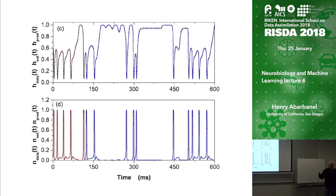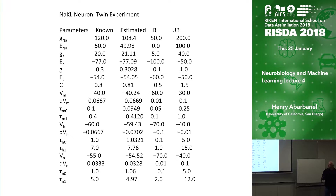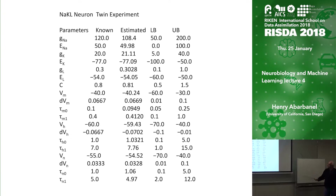There's no new information here — this is a twin experiment where we know what the parameters are. Here are the estimated parameters in the second column: they're not perfect but they're awfully good.